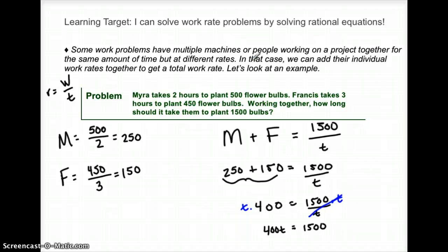So 400T equals 1500. And then I simply need to divide by 400 on both sides. So those zeros cross out.